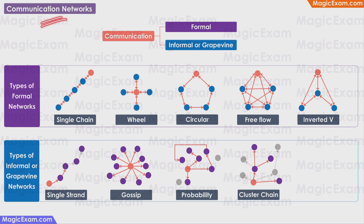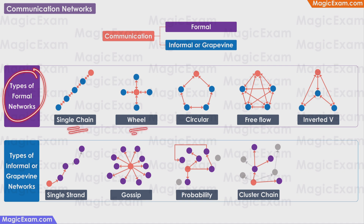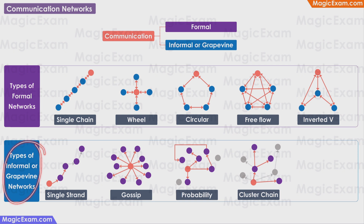Let us look at the different types of communication networks. There are two types of communication in an organization: formal and informal. There are five main types of formal communication networks: single chain, wheel, circular, free flow, and inverted V. There are four main types of informal communication networks: single strand, gossip, probability, and cluster chain. A network is a path or route through which information flows within the organization, referring to the pattern or structure of information flow between different individuals or groups.